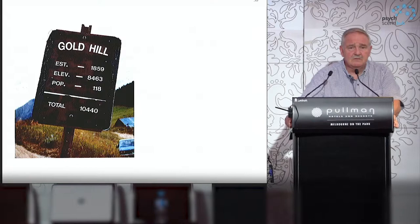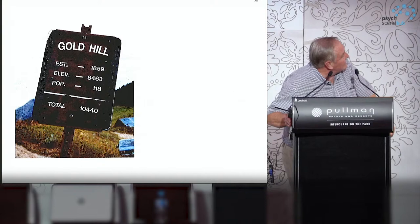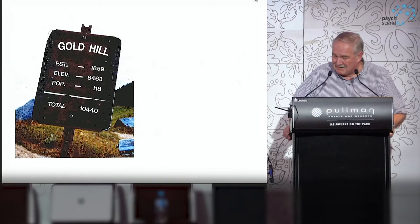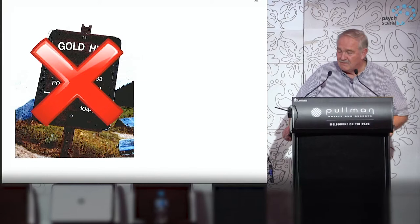Here is a real place: Gold Hill exists. It was built in 1859, has an elevation of 8,453 feet and a population of 118. The total is helpfully displayed there, and it does show that someone could add up — but beyond that, it doesn't actually contribute a great deal to our understanding of what goes on in that town.